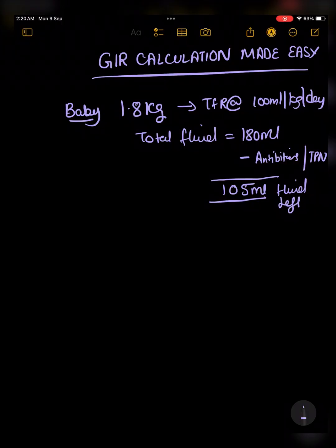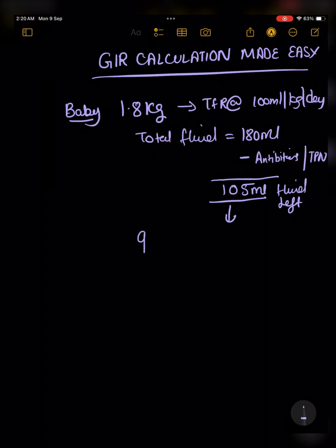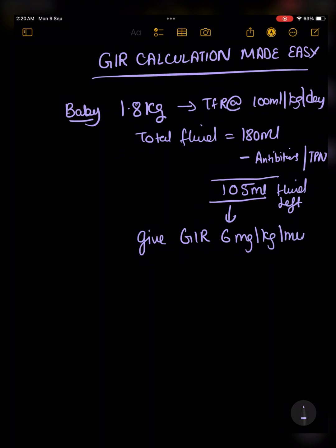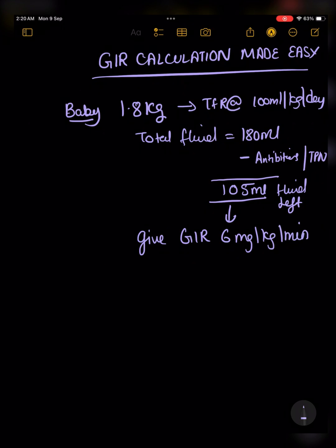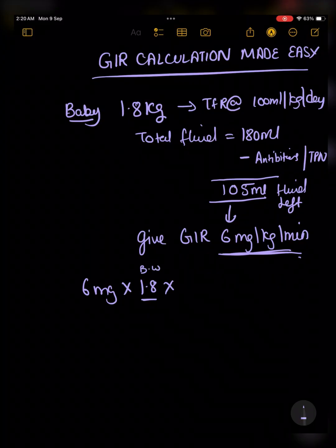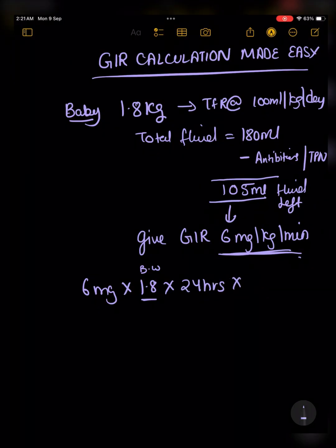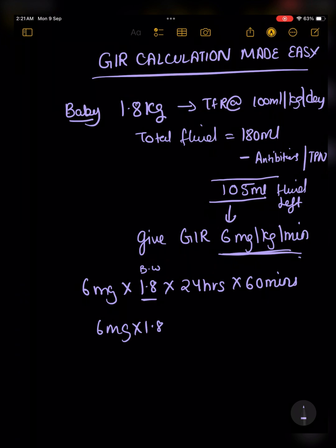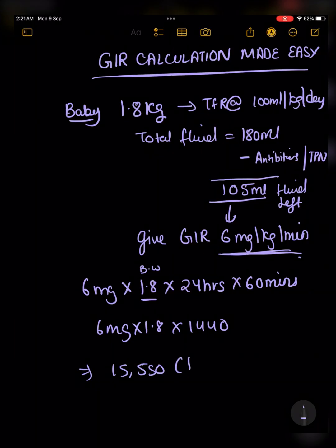Your consultant tells you to make a GIR of 6 mg per kg per minute out of this 105 ml of fluid. So how will you do it? We know the total sugar that will go to the baby in a day with a GIR of 6 mg per kg per minute is: 6 × 1.8 kg × 24 hours × 60 minutes. This gives us the total amount of sugar the baby will receive in the whole day, which comes out to around 15,500 milligrams.